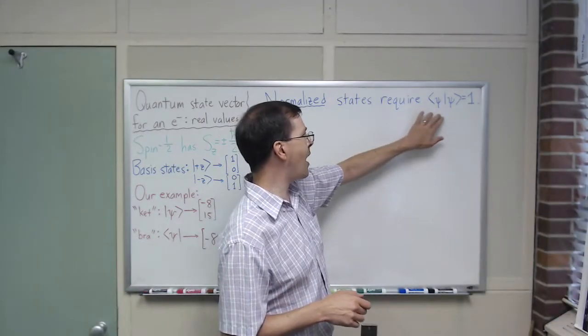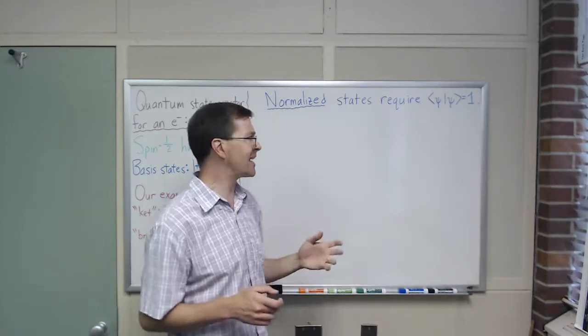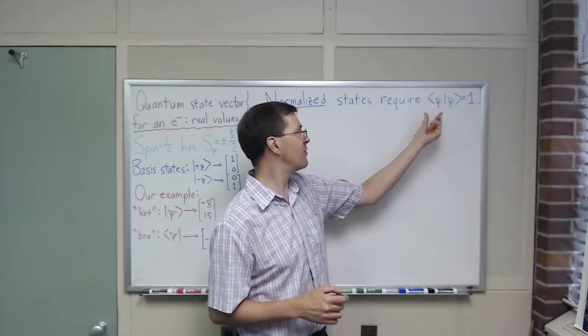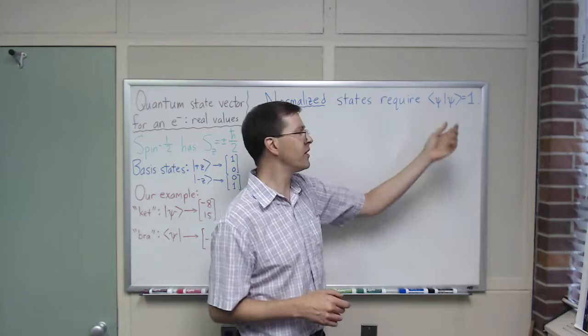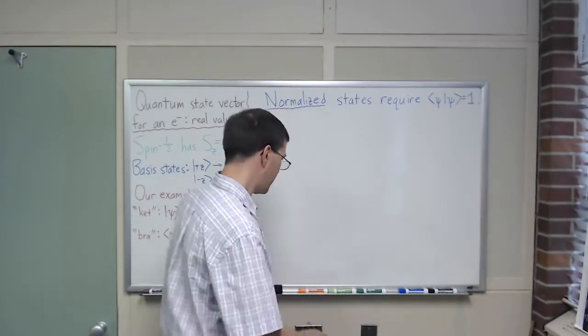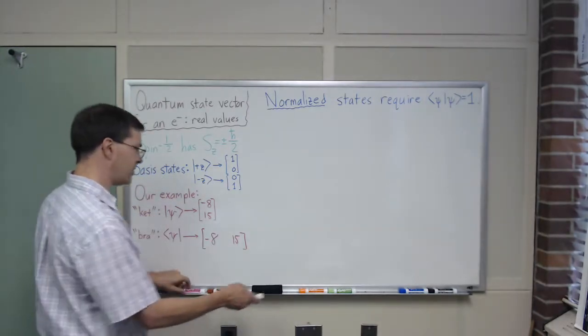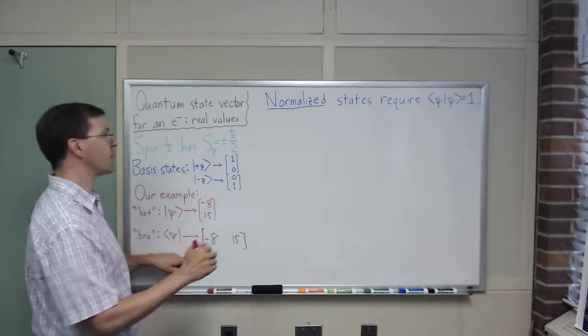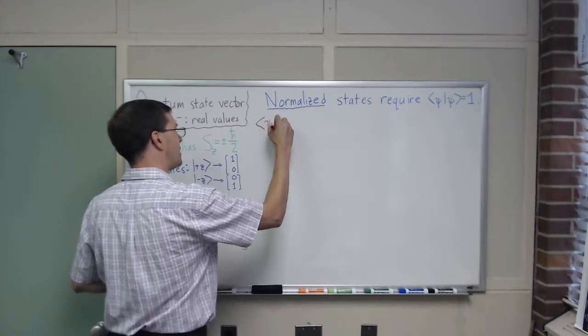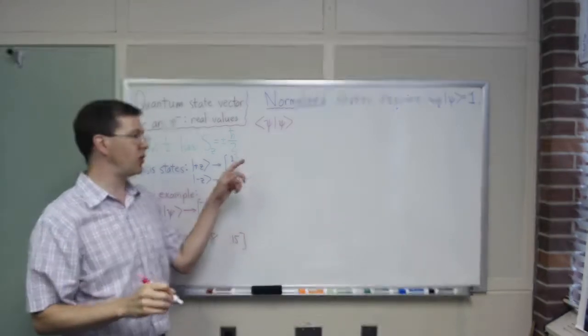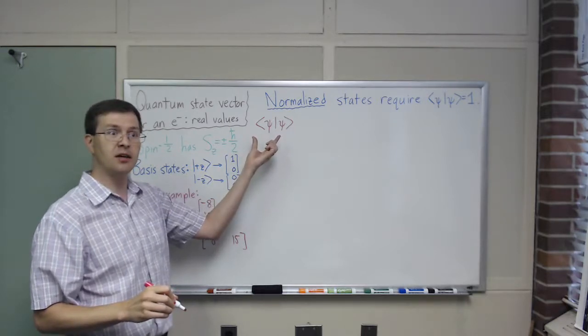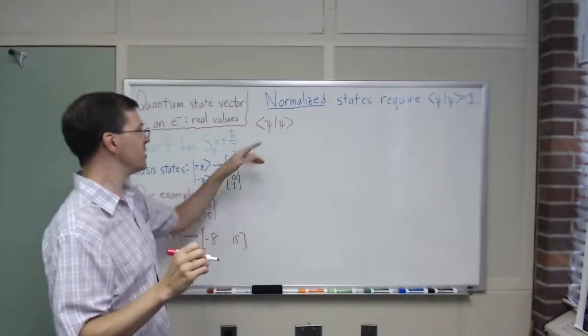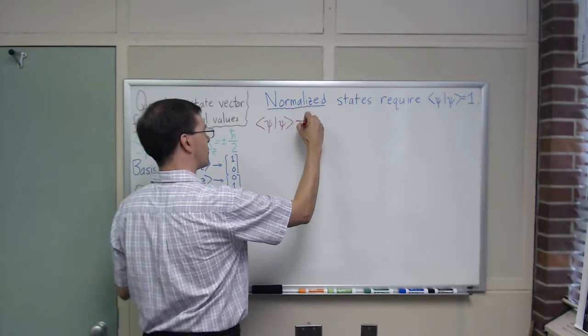A normalized state requires the ψ bra acting on the ψ ket to equal 1. I say acting on—there's a lot of detail I could give you about the mathematics of this, but roughly speaking, this is like a dot product, an inner product of the ψ bra and the ψ ket with one another. So that has to equal 1. For our example, psi bra with psi ket. Why is this called a bra and a ket? Because when you put them together, it's a bracket. Dirac bra-ket notation.